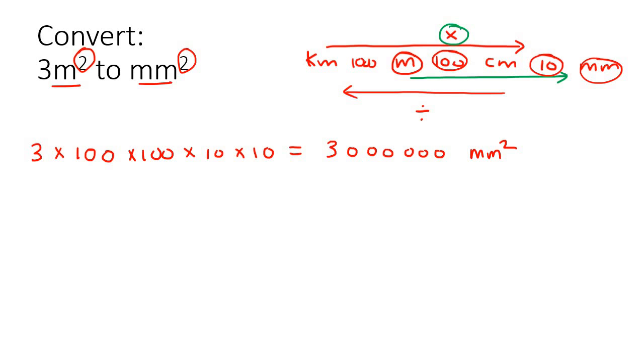That's going to give us one million — six zeros — and that's going to be in millimeters to the power of two. So that's all we're going to do. Normally you would have just said three multiplied by a hundred and then multiplied by ten, but because of the twos you're just going to do it twice.